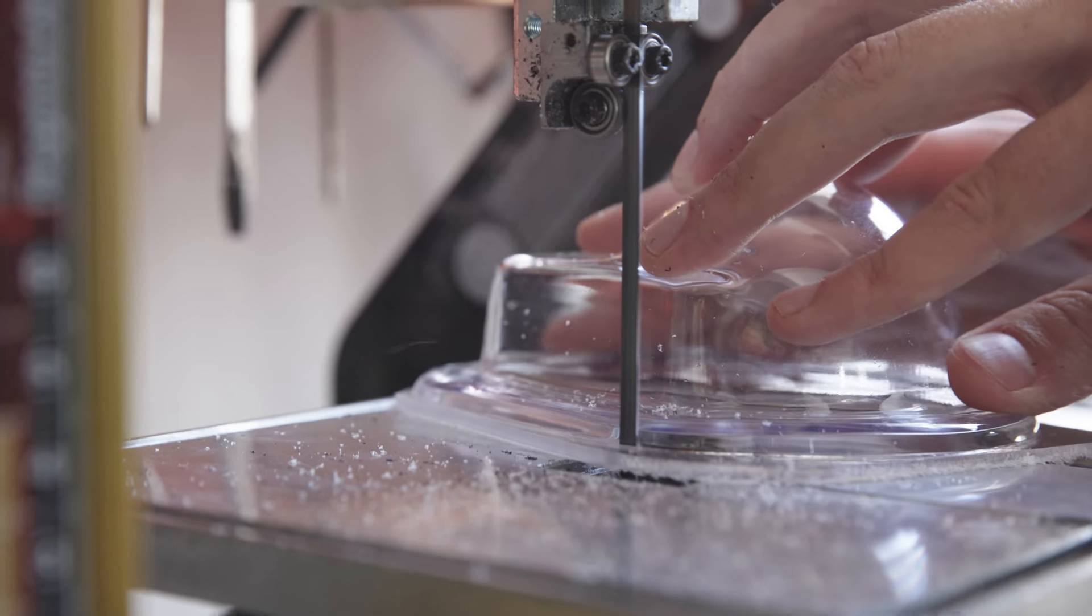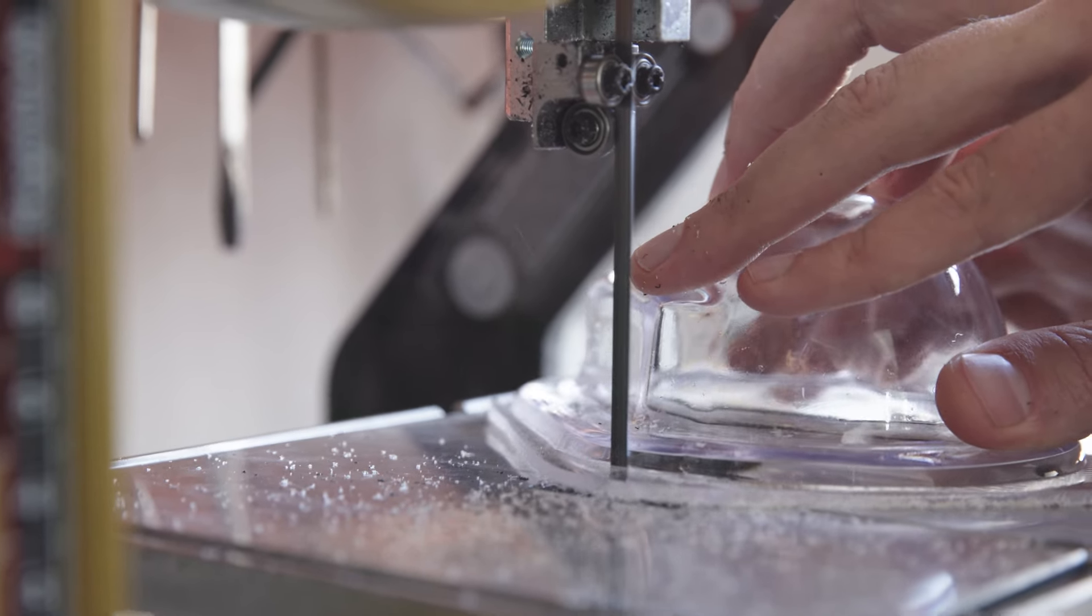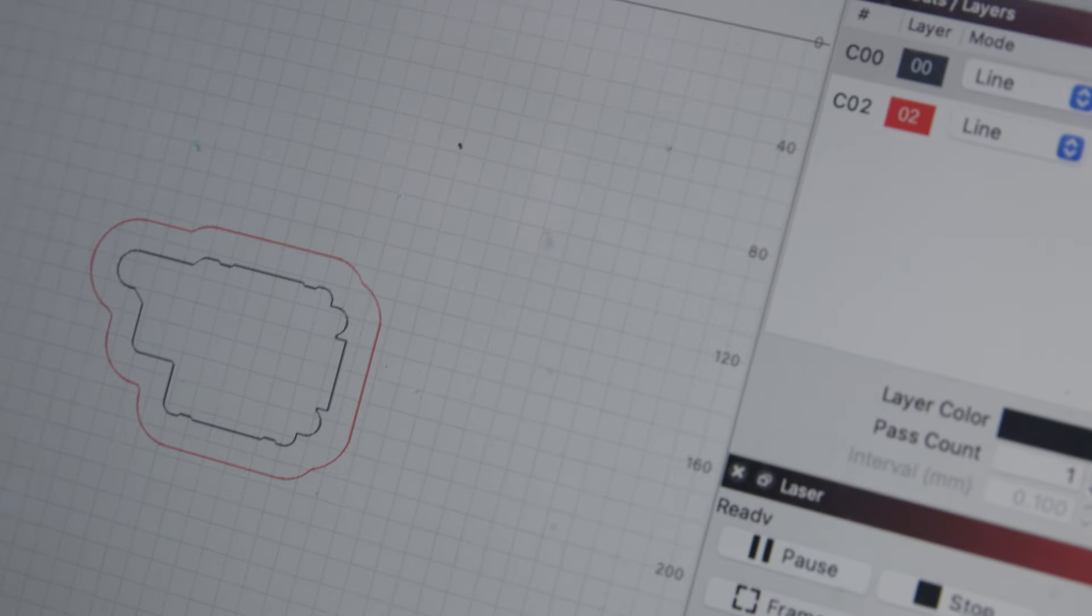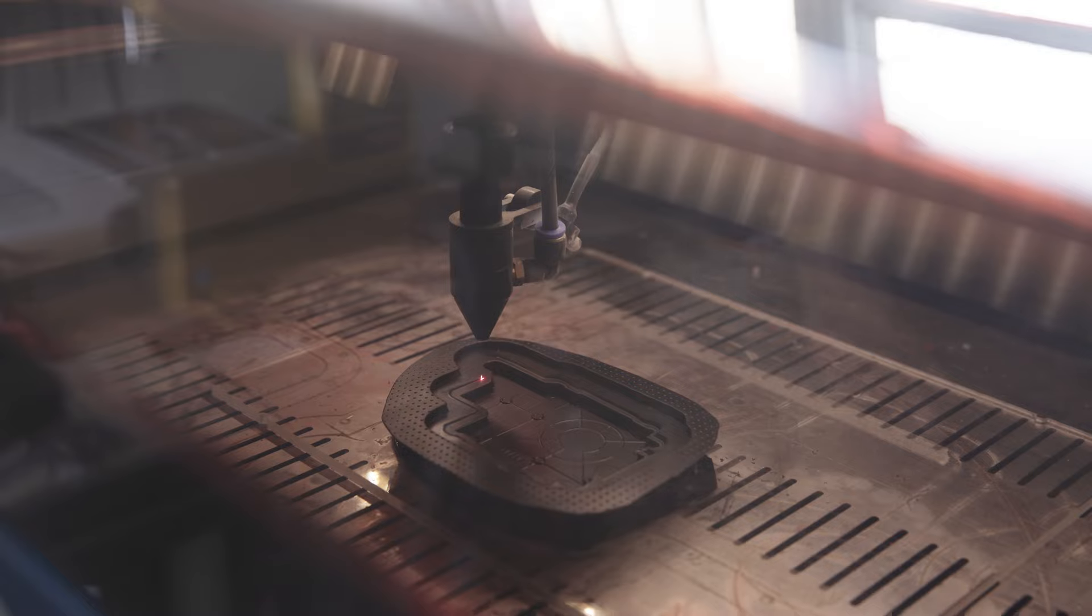Now we're going to do a rough cut on the bandsaw just to get it off the excess sheet and get it ready for finishing. Or you can attach this part to a jig and automate your workflow by using a laser cutter or a CNC.